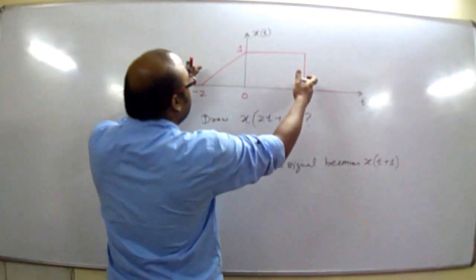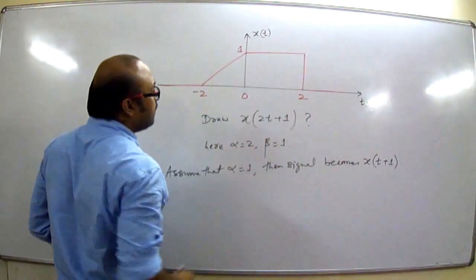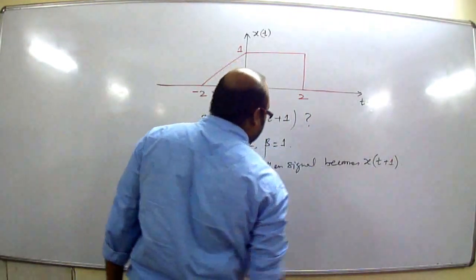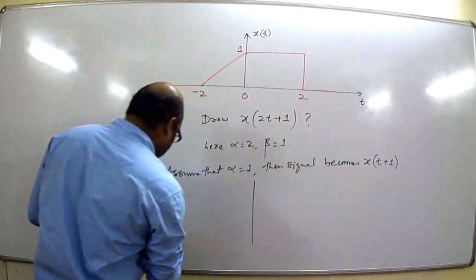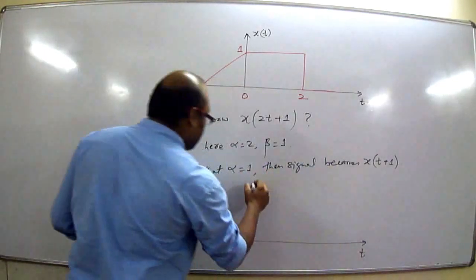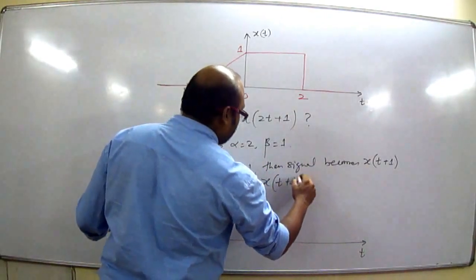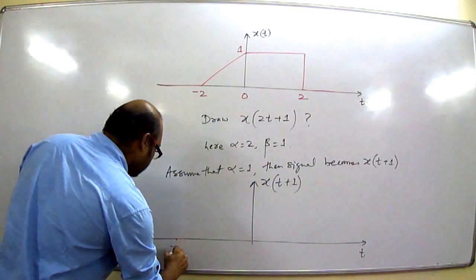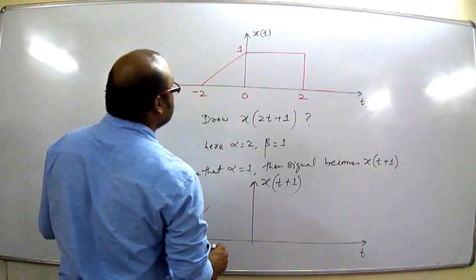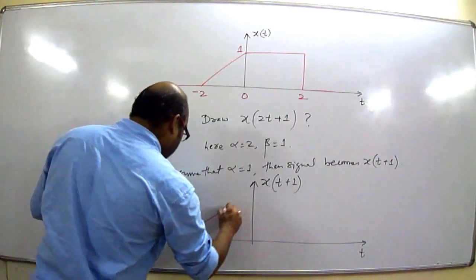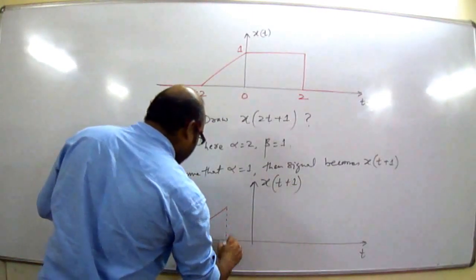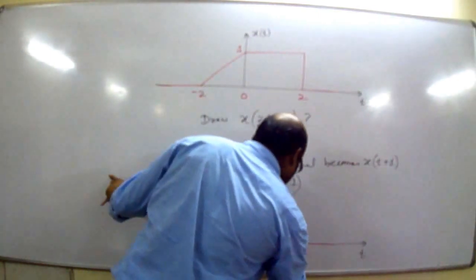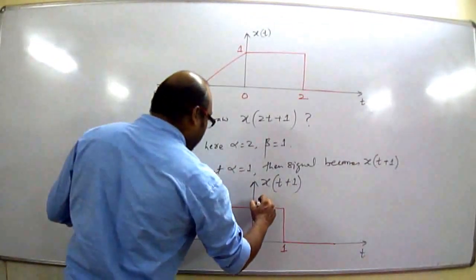Now we will draw x(t + 1) from x(t). To draw x(t + 1), we simply advance the signal x(t) by one second. In the advance operation, the entire signal is shifted towards the left side by one second. Let us draw x(t + 1).